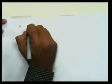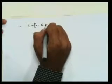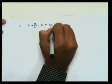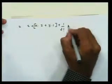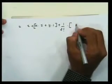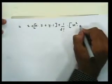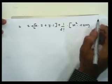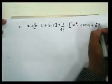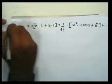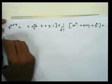The Maclaurin series of f(x,y) = e^(x+y) is: f(0,0) + x·fx(0,0) + y·fy(0,0) + (1/2!)[x²·fxx(0,0) + 2xy·fxy(0,0) + y²·fyy(0,0)] + … Since all partial derivatives at (0,0) equal 1, this becomes: 1 + x + y + (1/2!)(x² + 2xy + y²) + … This is also known as the Taylor series at the origin.